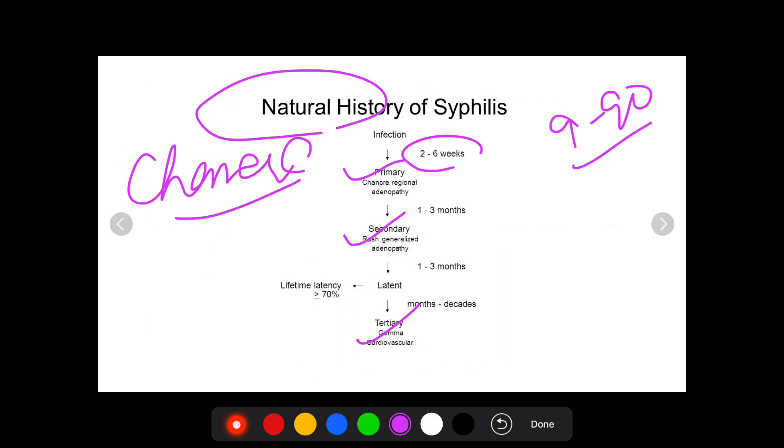After primary syphilis, when a person has not been treated, this chancre resolves on its own. The person sometimes thinks that the disease has actually gone away. But later, the disease presents in other signs and symptoms. This is the secondary phase of the disease or secondary syphilis.